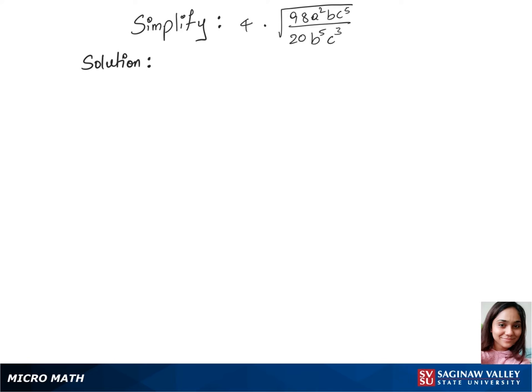We'll simplify this question. First, let's assume all variables represent non-negative real numbers, and we'll write our first step, which is 4 times square root of 98a²bc⁵ over 20 times b⁵ times c³. We wrote down the question here so it's easier to strike out those b's and c's.